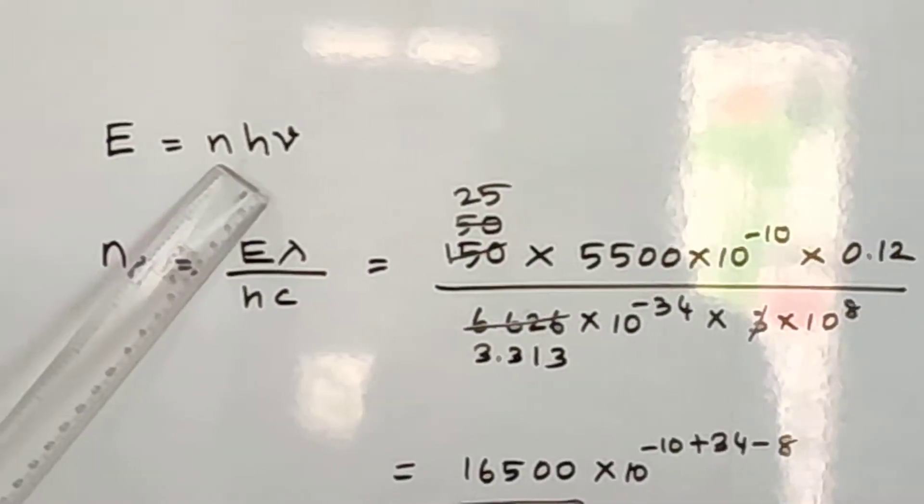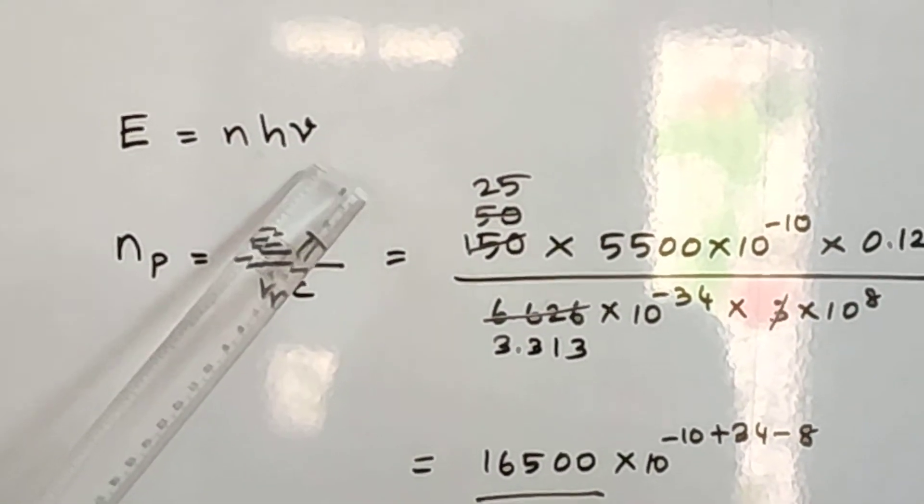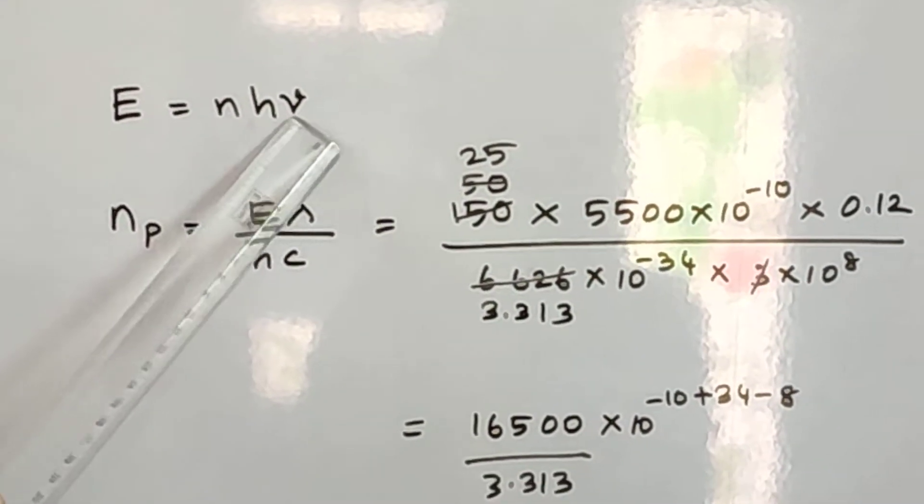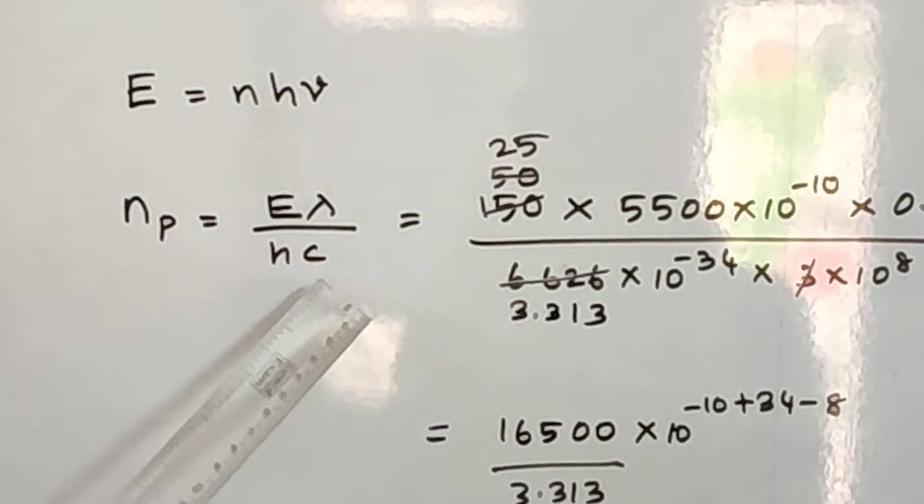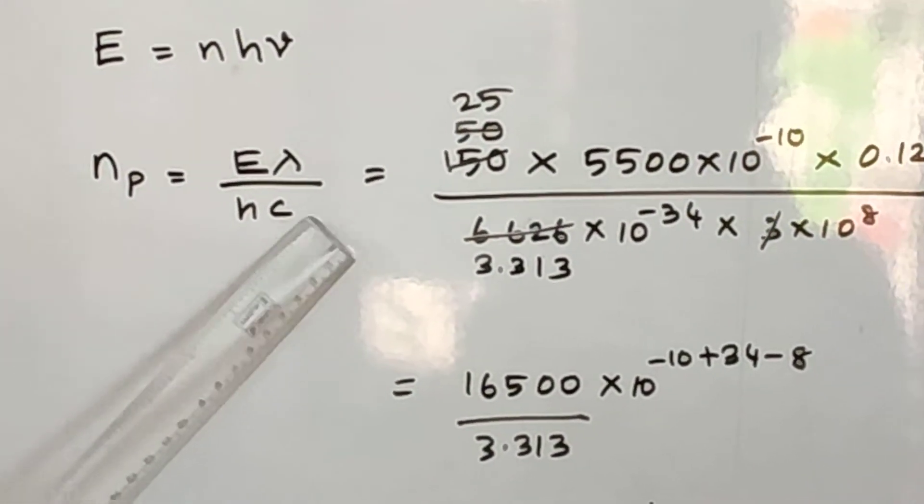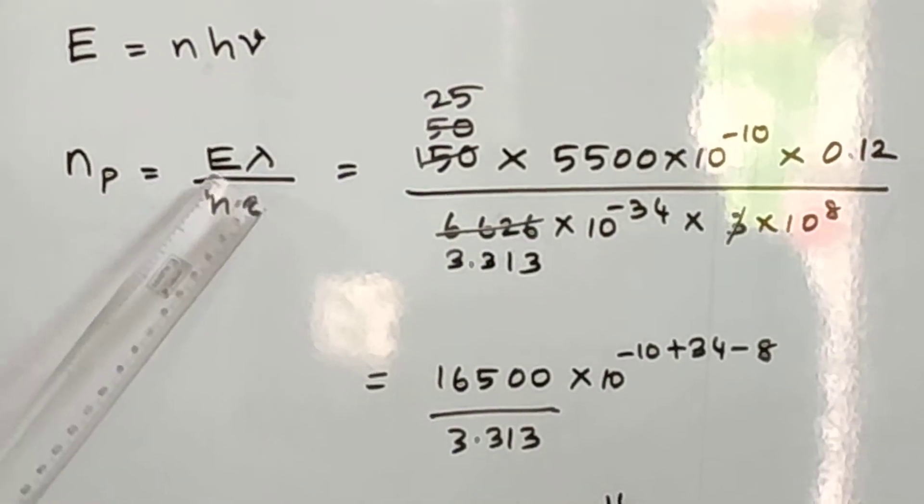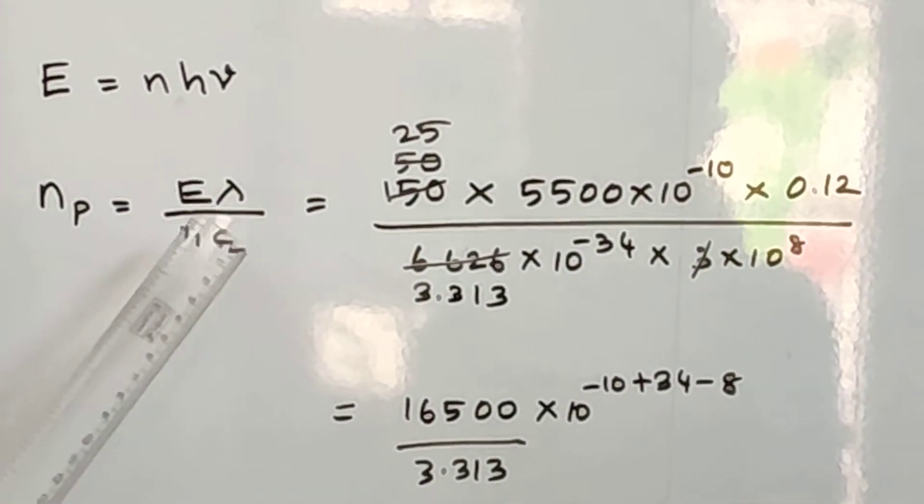So E is equal to N into H into nu. Nu is nothing but C by lambda, so Np is equal to E into lambda by H into C.